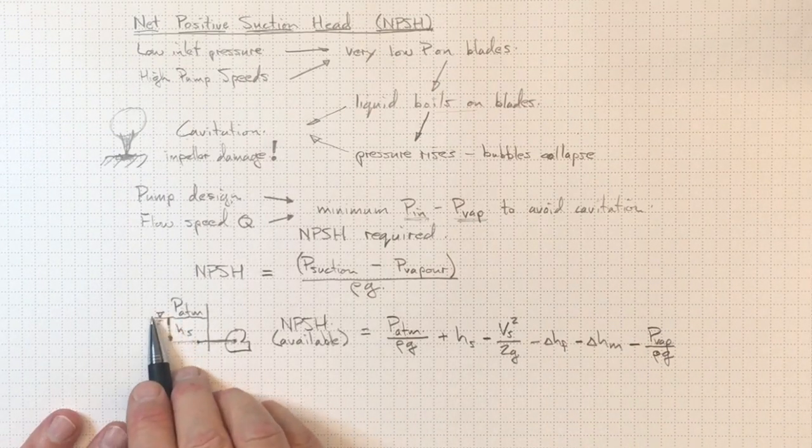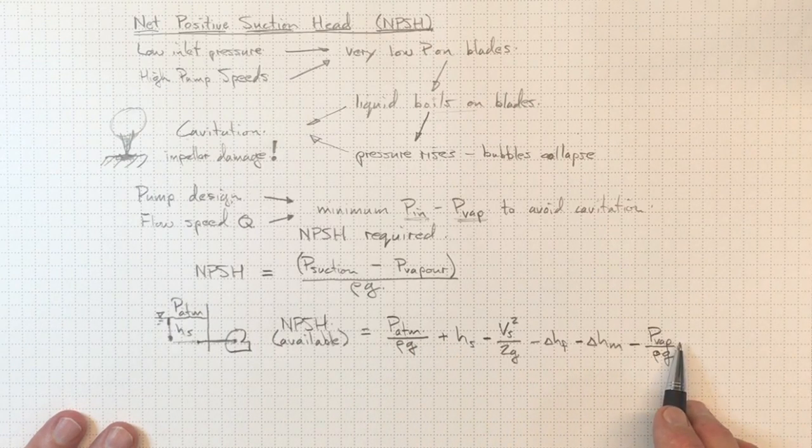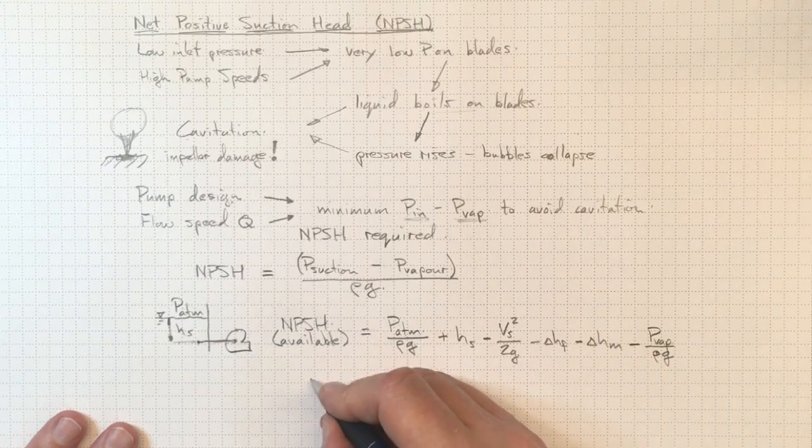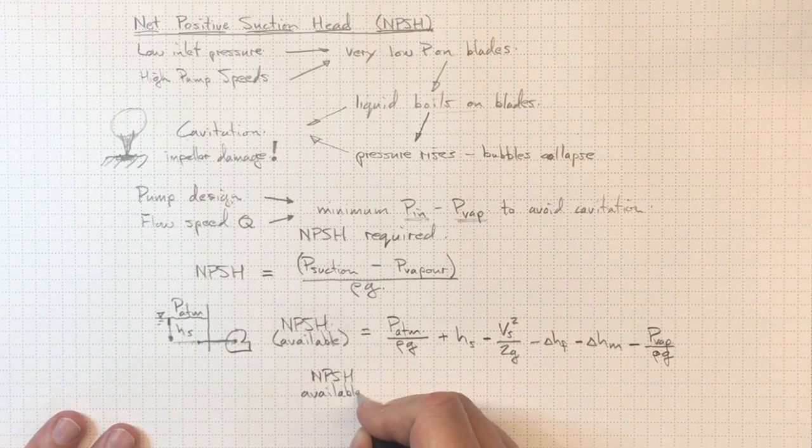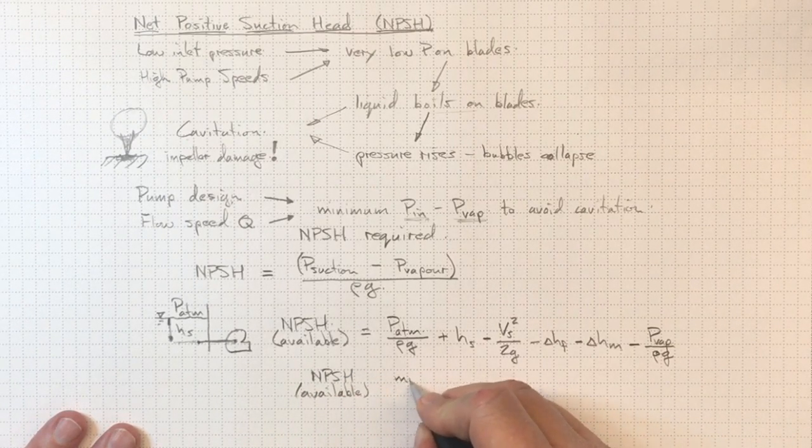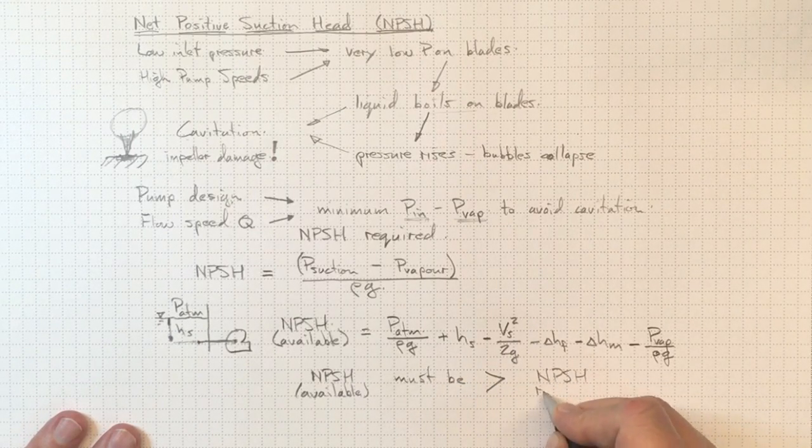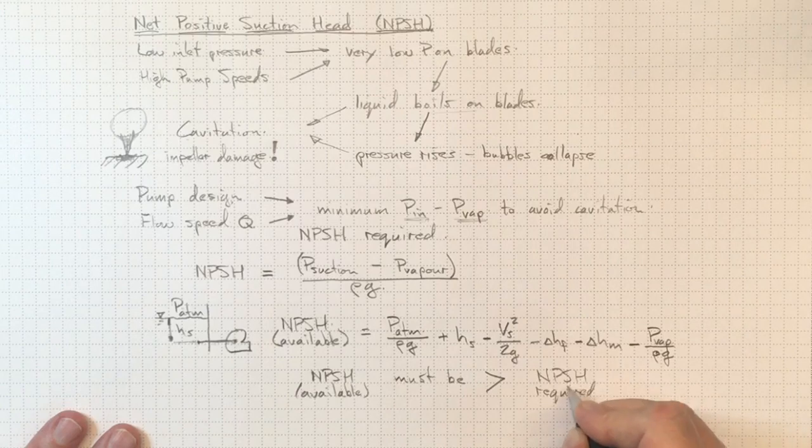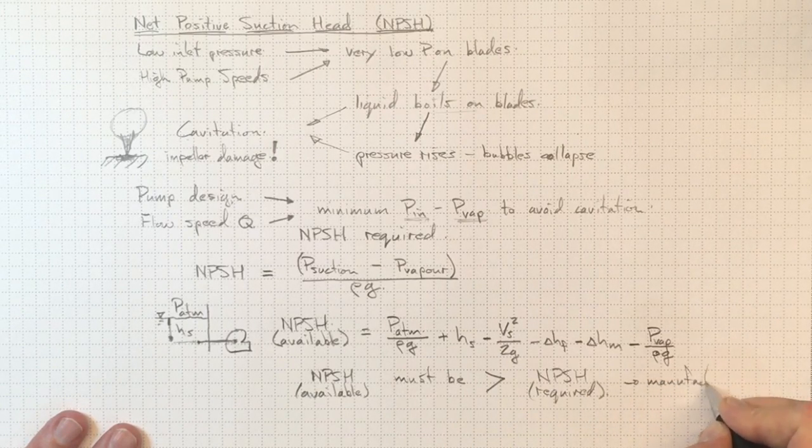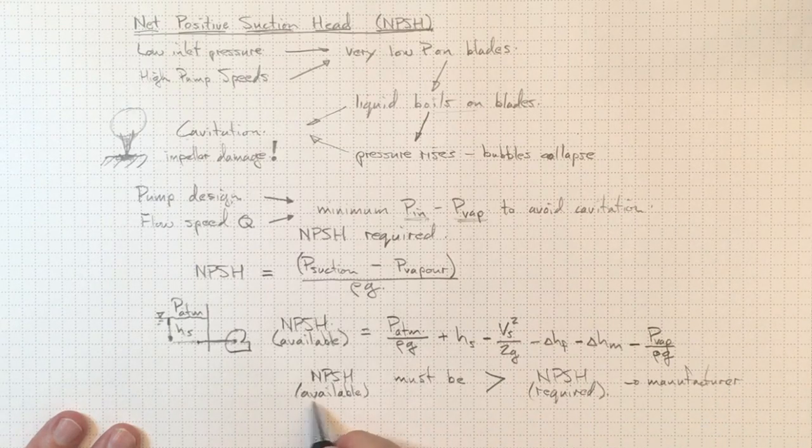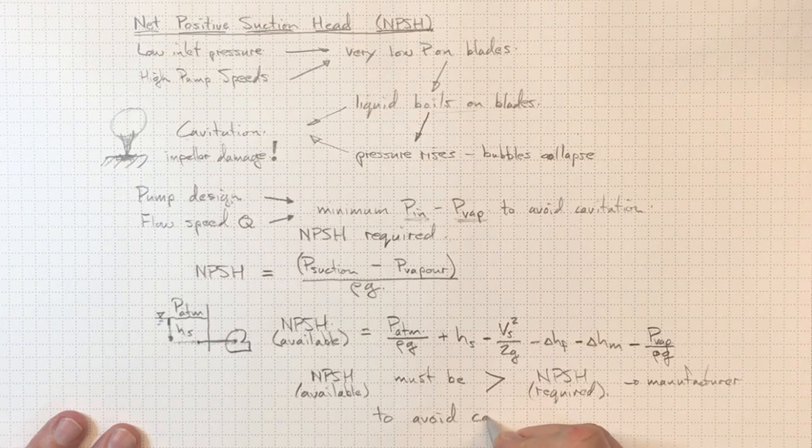So if we've done our piping design, we should be able to figure out what all of these things are in order to figure out how much NPSH we've got available. And then the test is simple. We just need to make sure that the NPSH available must be greater than the NPSH required that we got from the manufacturer. If we take care to make sure that that relationship is met, then we will avoid cavitation.